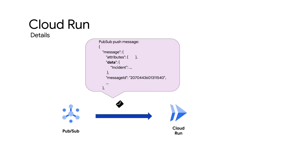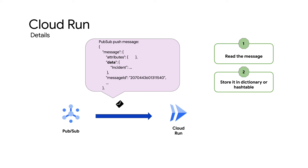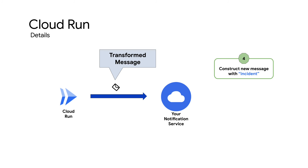Now that you understand the Cloud Monitoring notification message schema, let's look closer at your Cloud Run code. PubSub push subscriptions wrap the notification in JSON and post that to the Cloud Run service. Your code must read the message from PubSub stored in a dictionary or hash table, extract the data field in the message to get the incident as a dictionary, use the incident data to construct a new message to send to your notification service's API, and finally send the message and log the results.